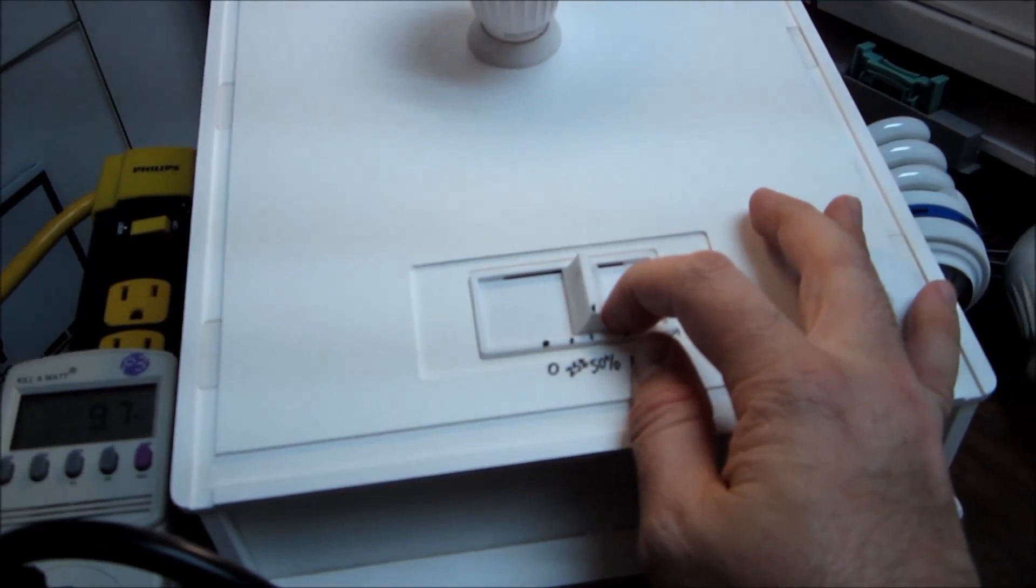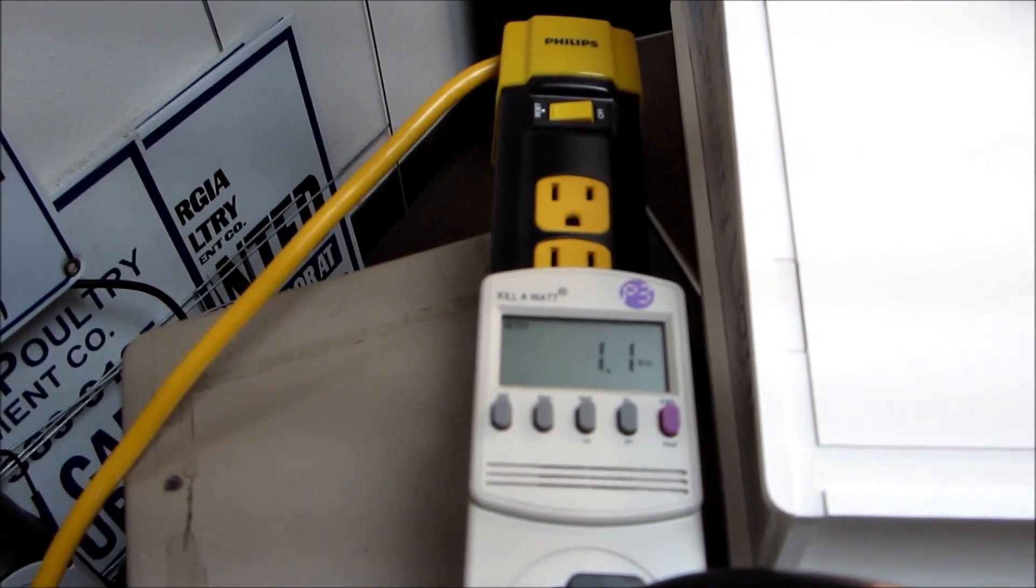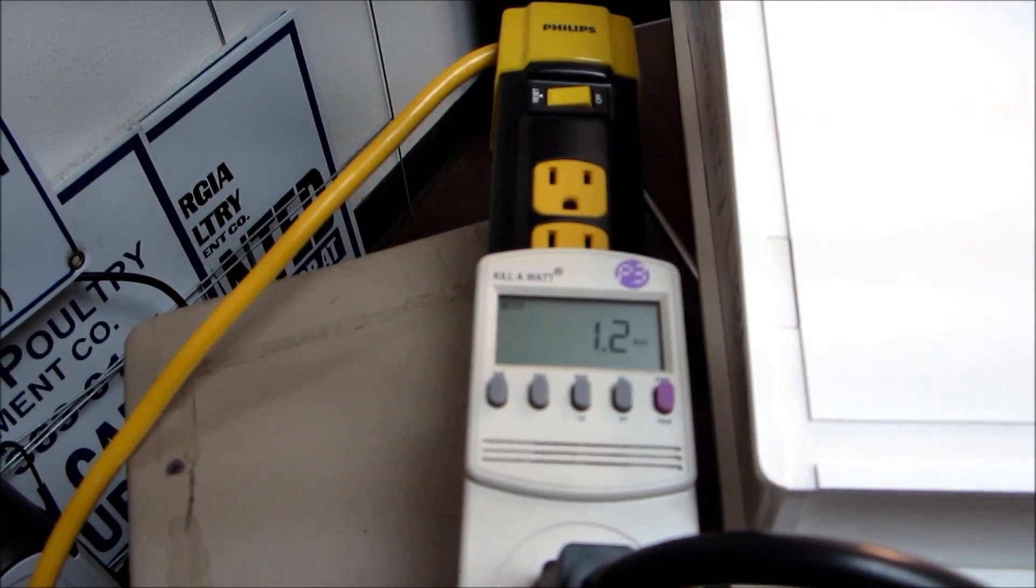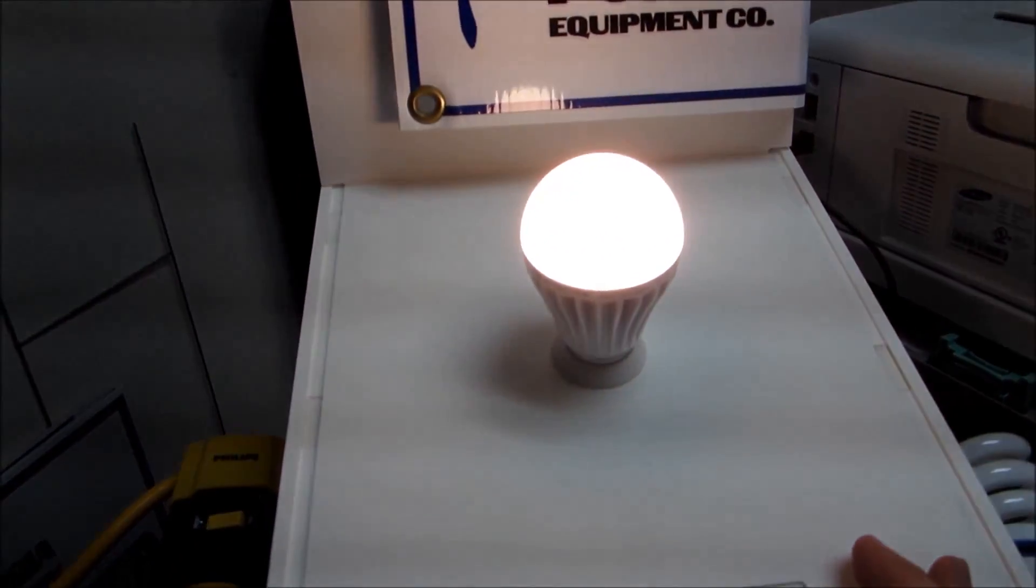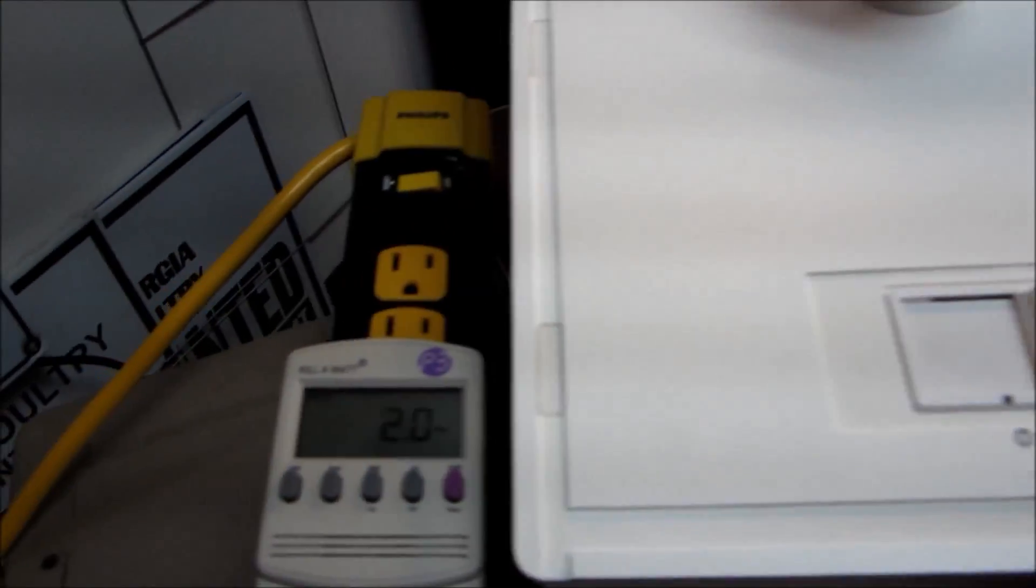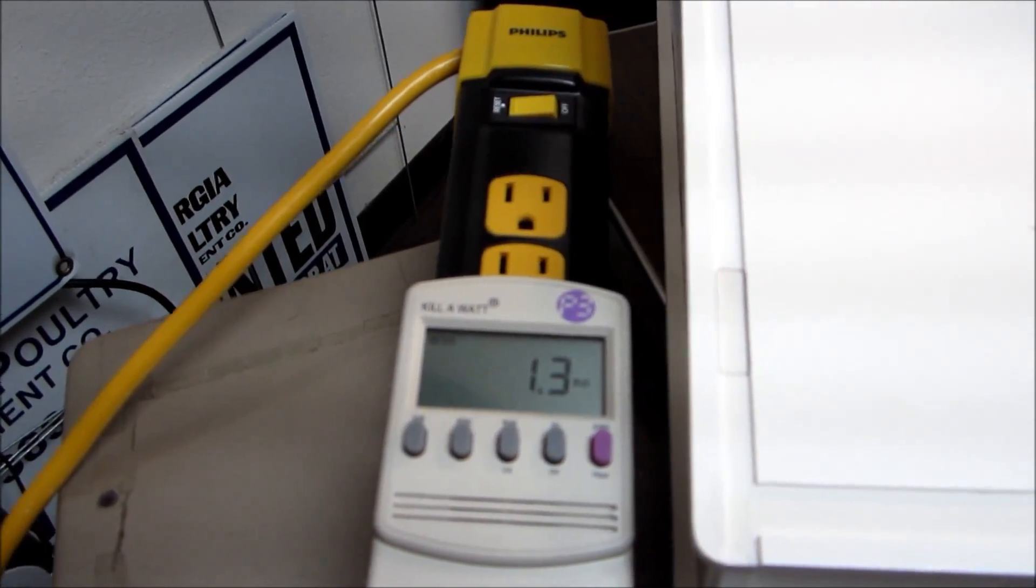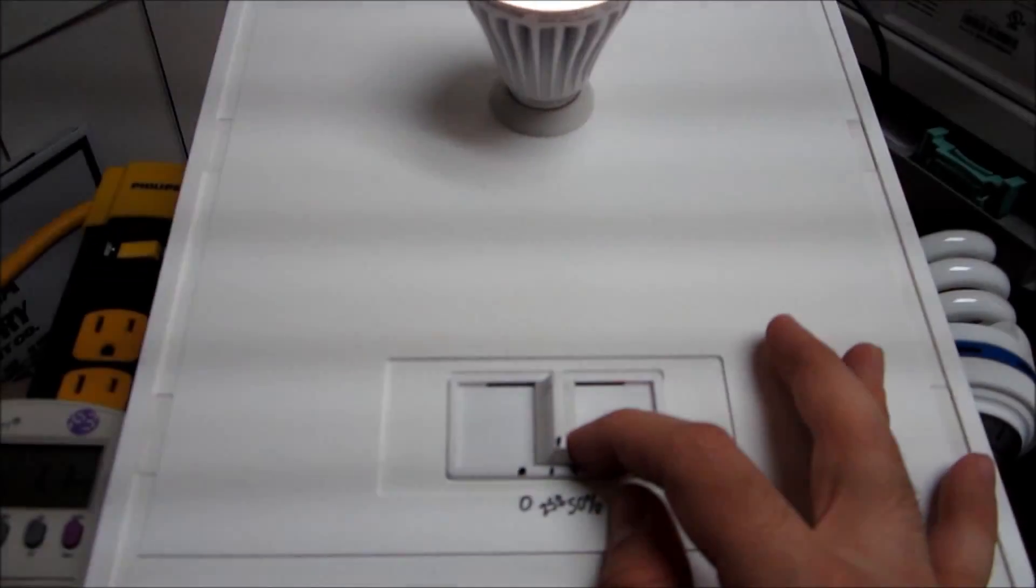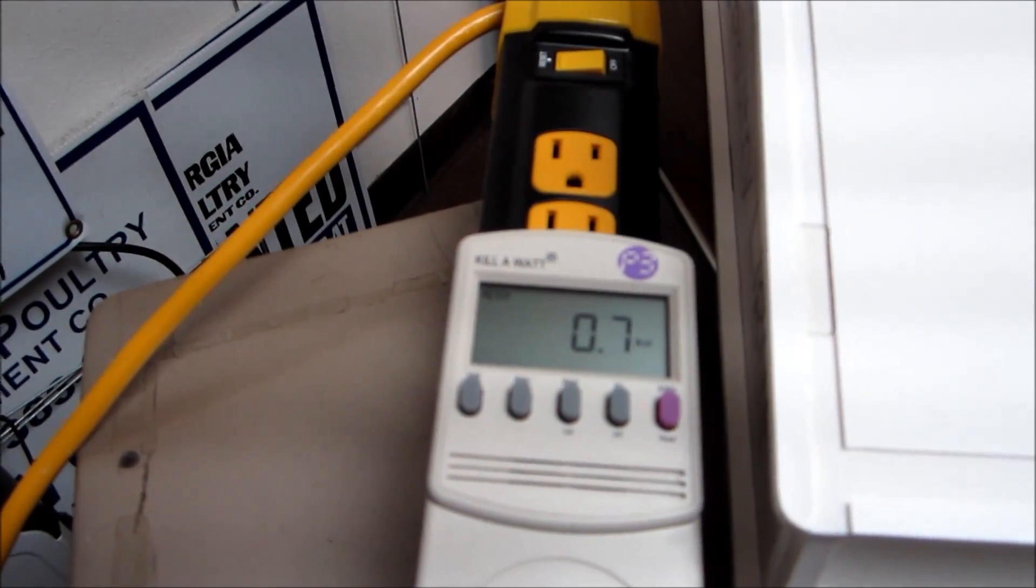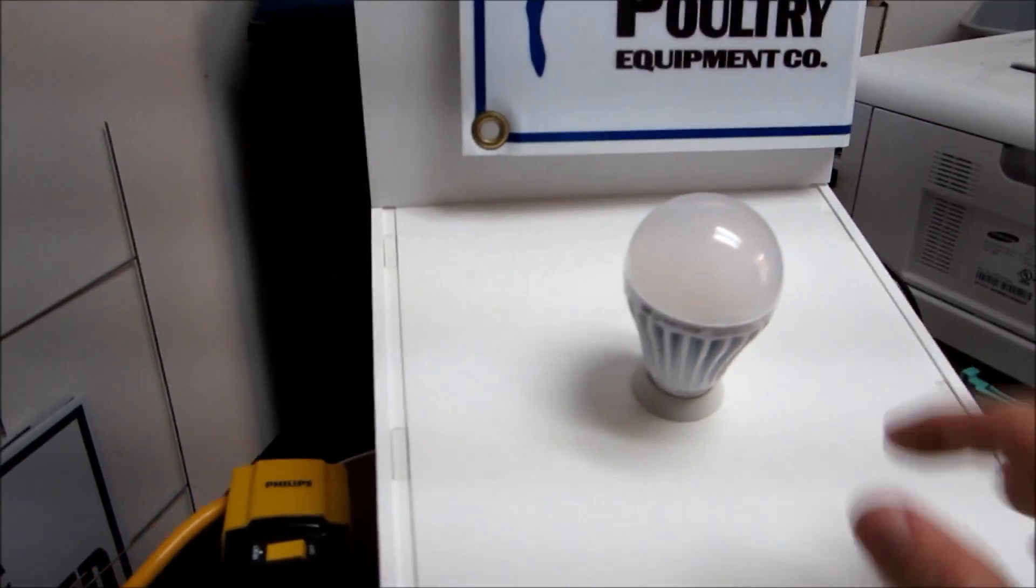Now we are going to move it down to 50% and at 50% we are using basically 1 watt of electricity, which is pretty impressive to be using something that is equivalent to 100 watts dimmed down to 50% and only using basically 1 to 2 watts of electricity now. And then dim it down to 25% and now we are using definitely below 1 watt of electricity per bulb.